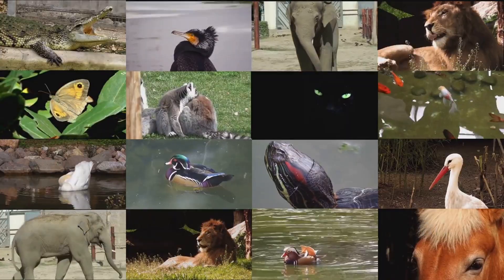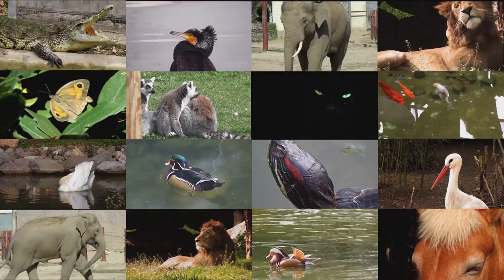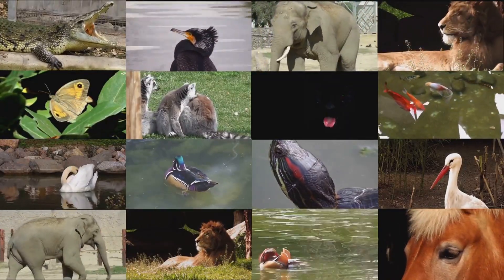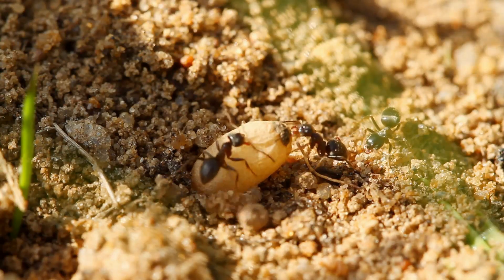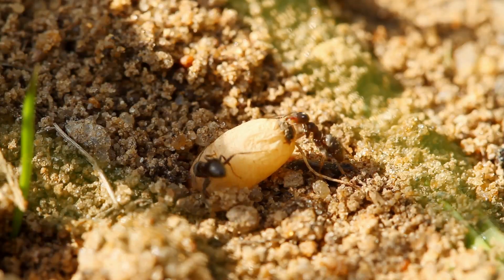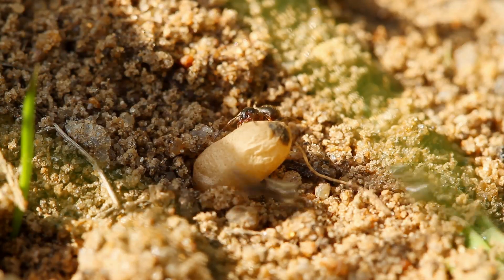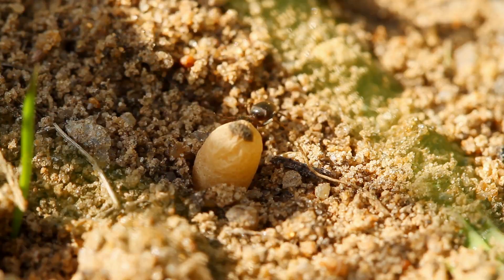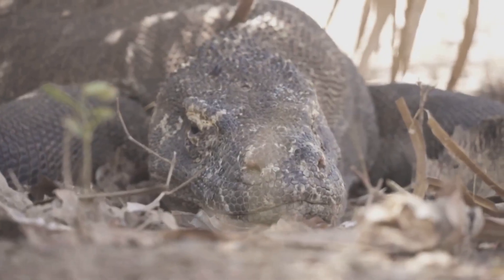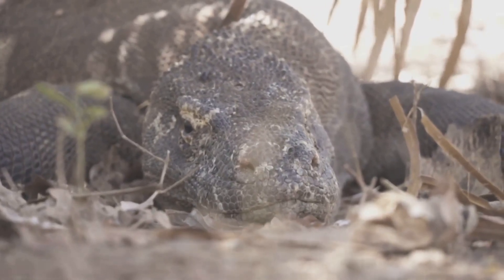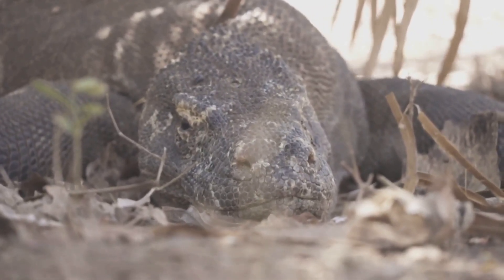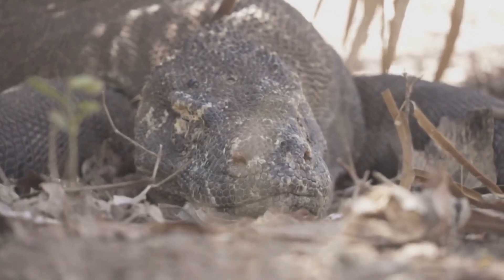In many animal species, parthenogenesis is a natural way to reproduce. For example, in bees, ants, and wasps, unfertilized eggs develop into males which are haploid, while fertilized eggs become females. Whiptail lizards and Komodo dragons are fascinating because their all-female populations can reproduce entirely without males.